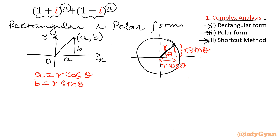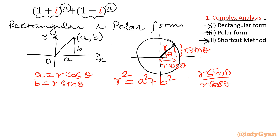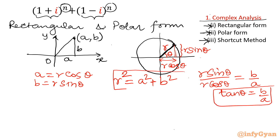If we take the square and add: r² cos²θ plus r² sin²θ equals a² plus b². So r² equals a² plus b². If we divide the second equation by the first — r sin theta over r cos theta equals b over a — then tan theta equals b over a. From this equation we can find theta, and from r² = a² + b² we can find r.